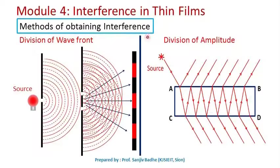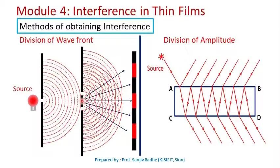We can obtain interference by using two methods: the division of wavefront method and the division of amplitude method. In the division of wavefront method, a single wavefront is divided into two wavefronts with the help of two slits kept in front of a single source of light. These two waves then interfere with each other and give rise to an interference pattern on a screen placed in front of the two slits.